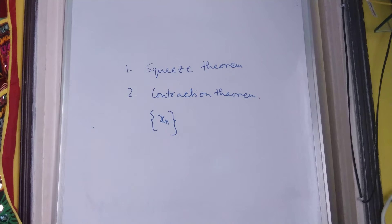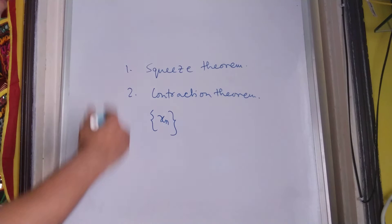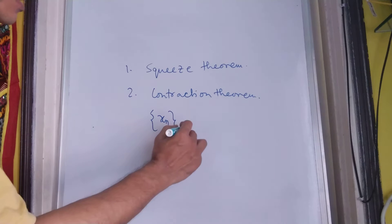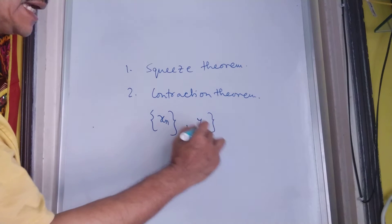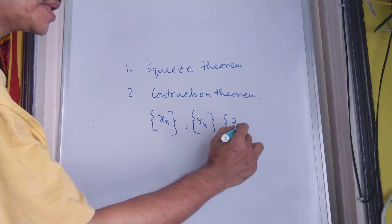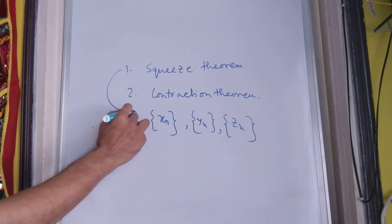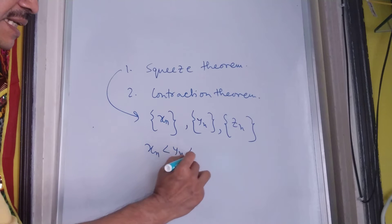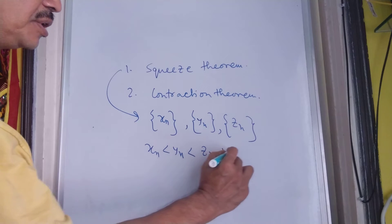These are two very important theorems. It is very apparent from the term that if we have three sequences xn, yn and zn such that xn is less than yn is less than zn for all n.